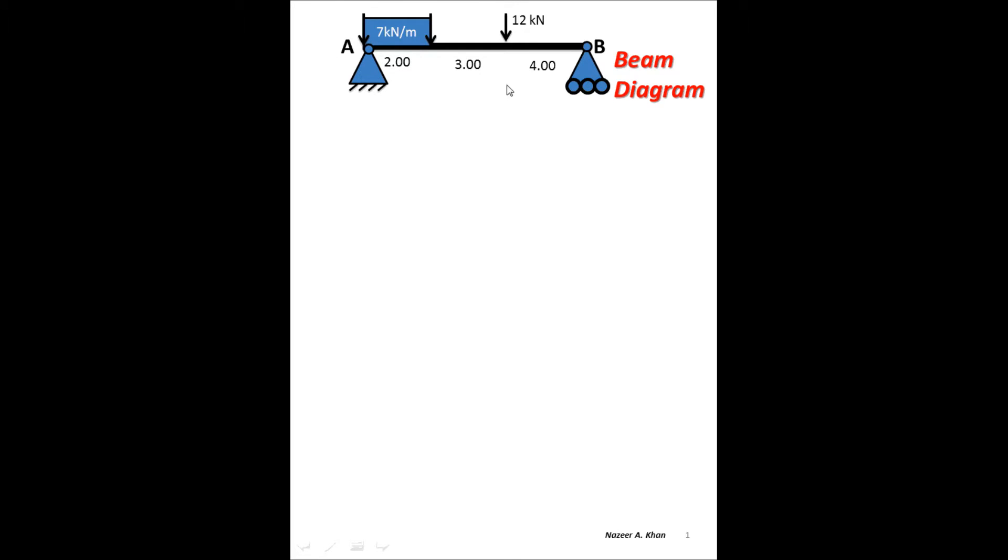For the right hand side, the roller support is unique in its nature. The roller support is represented by one force, one reactant force perpendicular to the base of it. So if this was oriented in the vertical direction where the roller was over here, you would have a force acting that way. So it's perpendicular to the base of it.